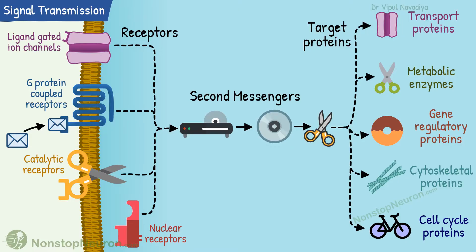So this is the basic thing that happens during intracellular signaling — transfer of signal from receptor to the target protein. Please remember that this is a general theme. The exact receptor, second messengers, and target proteins vary in different cells. But this is not the only function of the second messenger system.